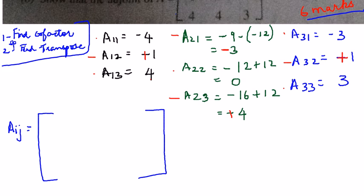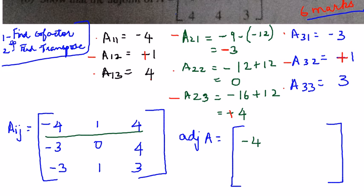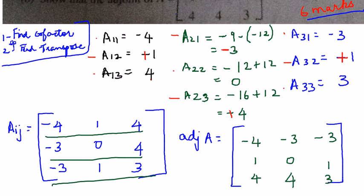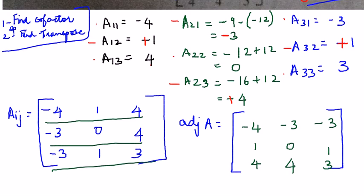The cofactor matrix is: [−4, 1, 4; −3, 0, 4; −3, 1, 3]. The adjoint of A is the transpose of this cofactor matrix — rows become columns and columns become rows. Taking the transpose, the first row (−4, 1, 4) becomes the first column, the second row (−3, 0, 4) becomes the second column, and so on. This gives us: [−4, −3, −3; 1, 0, 1; 4, 4, 3], which is exactly matrix A itself.